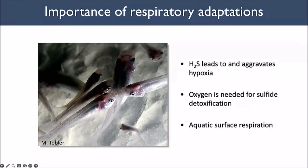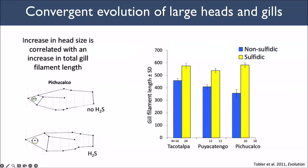There are also really important respiratory adaptations. Hydrogen sulfide causes and aggravates hypoxia, and these fish need oxygen to detoxify the effects of hydrogen sulfide — a double need. The fish perform aquatic surface respiration, spending a lot of time right at the surface water-air interface to access the highly oxygenated water there. This need for more oxygen has led to the convergent evolution of large heads and gills in all of the sulfidic springs. Geometric morphometrics and quantified gill filament length show significant differences in each of the drainages between non-sulfidic and sulfidic populations.